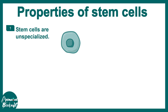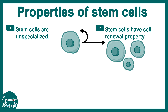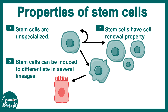Stem cells are unspecialized — that means they have the possibility to become many things, but right now they are in a malleable state. Stem cells have self-renewal properties and can also differentiate into several lineages based on context. In this video we would try to understand how these definitions don't always hold true in all contexts, so stay tuned till the end. These are pretty much a textbook-oriented view about stem cells.